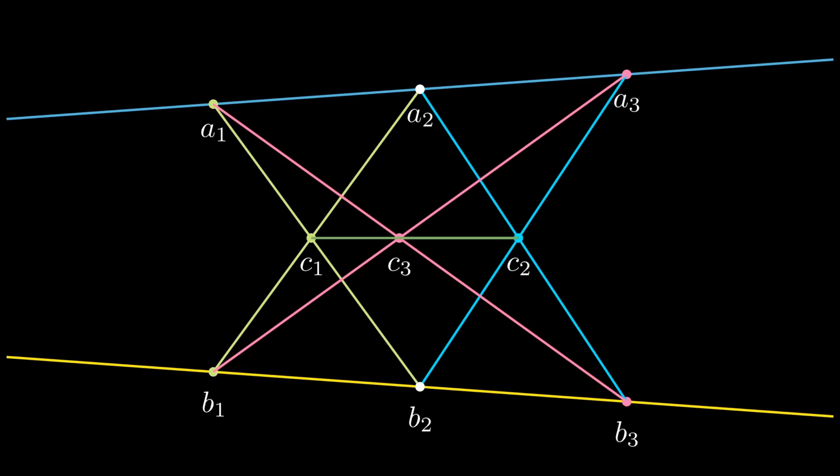Now let's look at a very interesting analog of it—a generalization of sorts. It's called Pascal's theorem, which starts with an ellipse. Again, take three points a1, a2, a3 on the ellipse and three more points b1, b2, b3 on the ellipse.